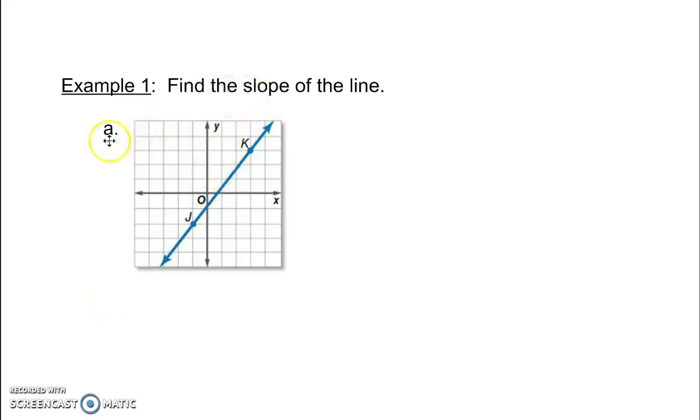If we want to find the slope of a line, we always read from left to right. Very important, read from left to right. So we're going to start at the leftmost point, and then move to the point on the right.